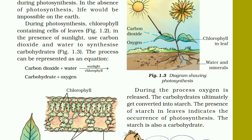Look at diagram 1.3. There is the sun which provides light energy. The leaves absorb carbon dioxide, water and minerals, and with chlorophyll they produce carbohydrates and release oxygen. Carbon dioxide plus water, in the presence of sunlight and chlorophyll, gives carbohydrates plus oxygen. That is what photosynthesis is.